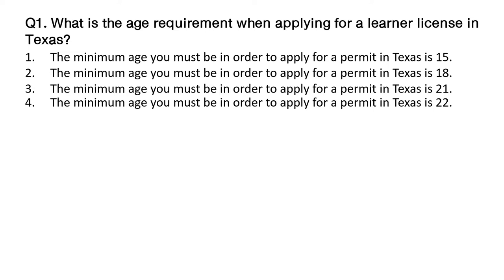Option number 2: the minimum age you must be in order to apply for a permit in Texas is 18. Option number 3: the minimum age you must be in order to apply for a permit in Texas is 21. Option number 4: the minimum age you must be in order to apply for a permit in Texas is 22.